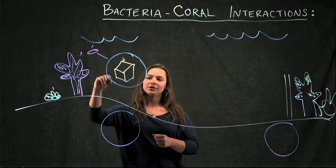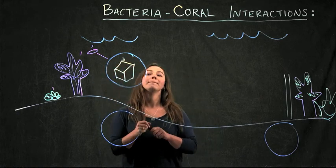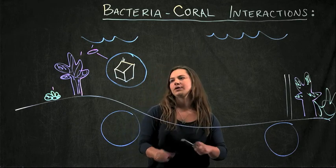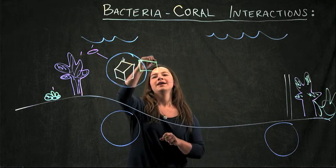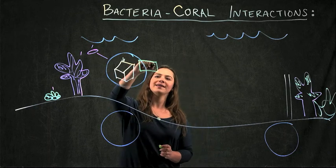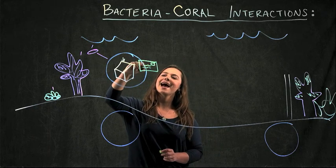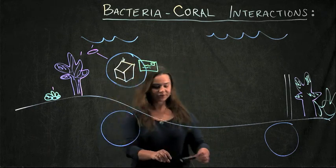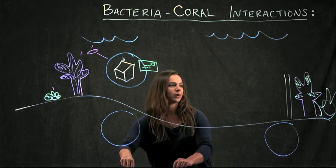And so the vesicle protects the package, but it also has specialized proteins on the outside of the membrane that act as the address for the package to make sure it gets to exactly where it wants to go.